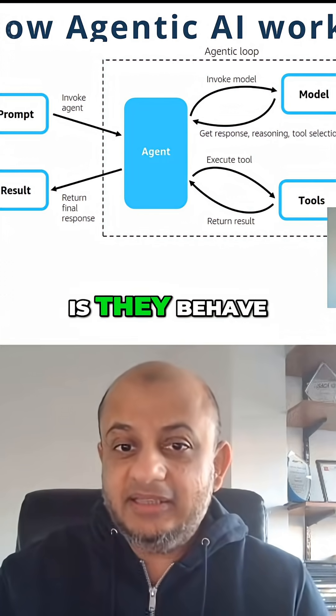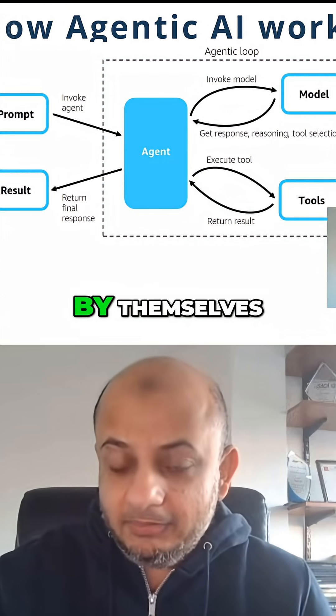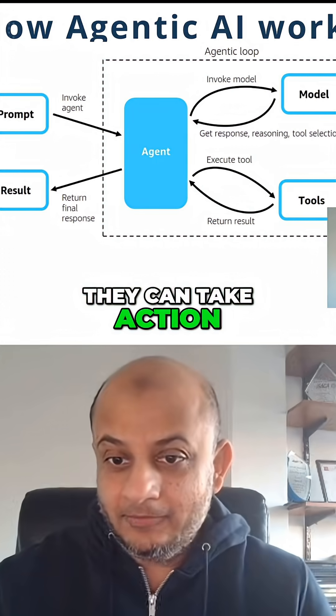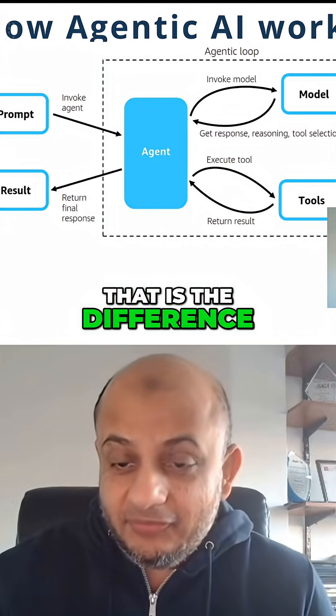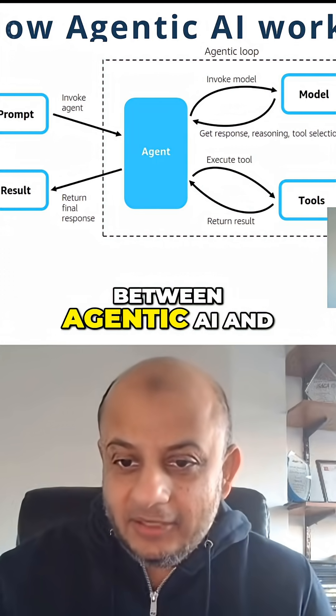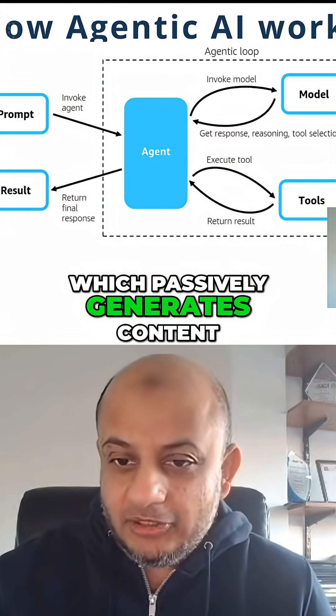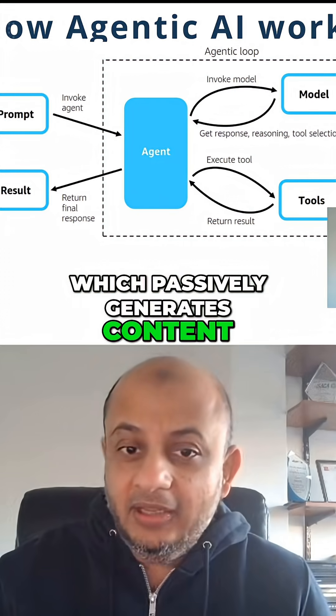But the main thing is they behave by themselves. They can take action. That is the difference between agentic AI and something like Gen AI, which passively generates content.